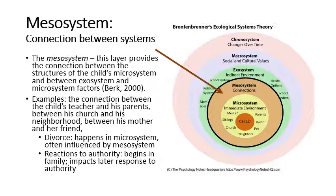The mesosystem refers to the interactions between aspects of the microsystem and aspects of the exosystem. For example, what do the parents think about the schools, or how does the parent get along with the teacher? If your parent is a teacher in the school, that could have a big impact on you because your teacher will know your parent very well and may treat you differently. We might also say that if parents are having frequent negative interactions with law enforcement, the child is experiencing and learning from that indirectly.